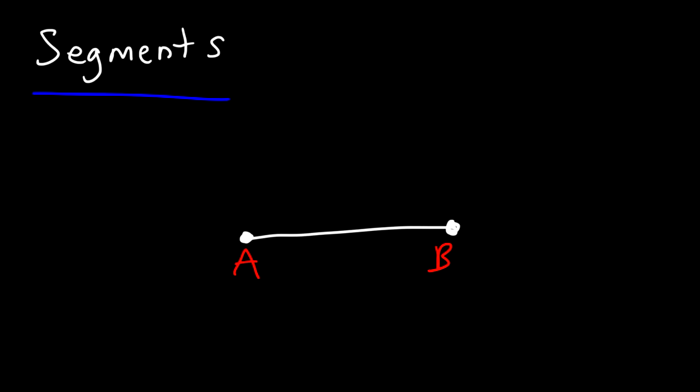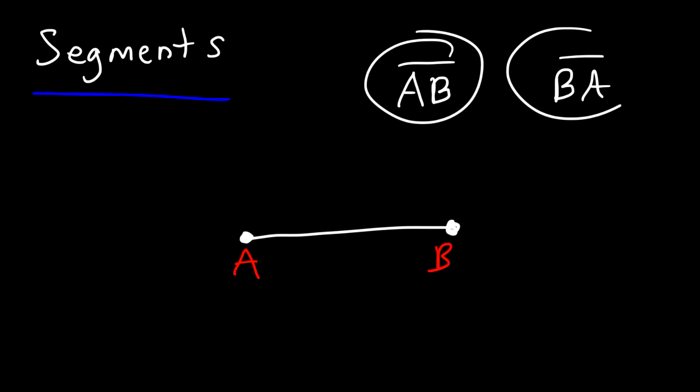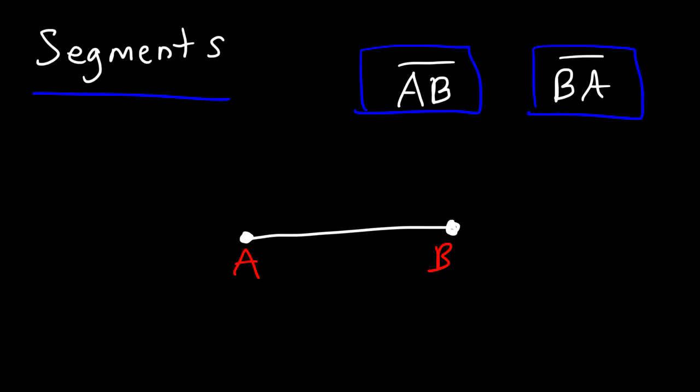So this can be called segment AB or segment BA. So as you can see, there are no arrows. So that tells you that it's a segment. If we put two arrows on it, then we have line AB. It's no longer a segment. But if you don't see those two arrows there, then it's a segment. So you need to be able to distinguish segments from lines.